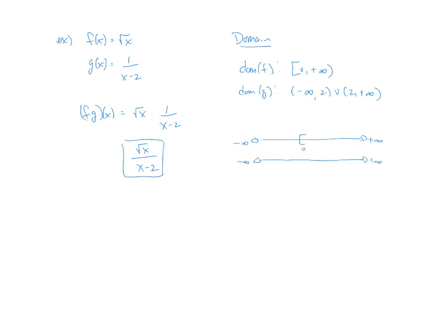So 0 to infinity would be here. Everything but 2 would look like this. And if we're looking for the intersection or we're looking for the overlap then you can see that from 0 to 2 and then 2 to infinity would be the common x values. So the domain of our resulting function would end up being 0 to 2 union 2 to positive infinity.